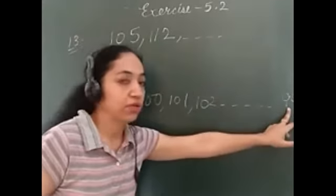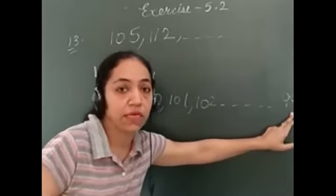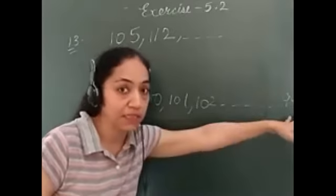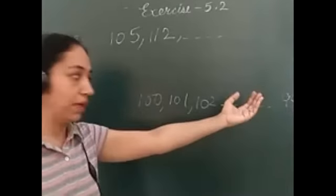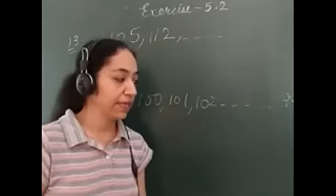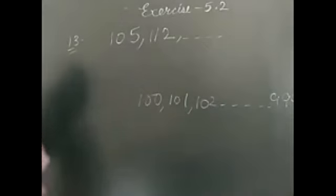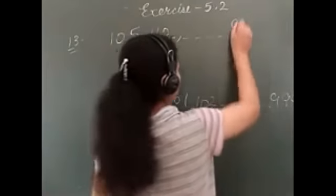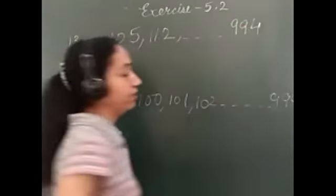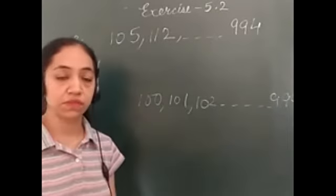And what will be the last 3-digit number which will be divisible by 7? Is 999 divisible by 7? No. Then you cannot go ahead. Because ahead it becomes 4-digits. You will have to come back. You will have to check 998. Is 998 divisible by 7? No. 997, 996, 995. Check and quickly tell me which 3-digit number is the largest divisible by 7. Yes, that will be 994.